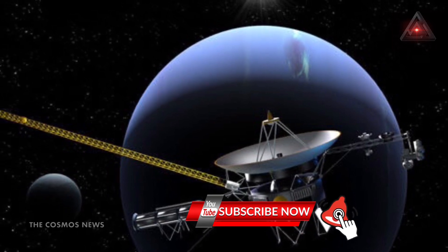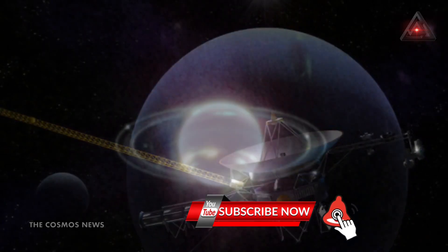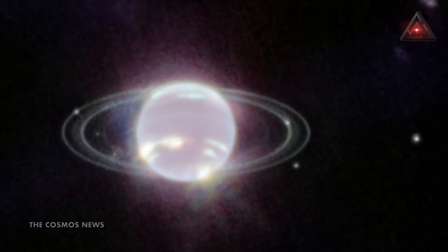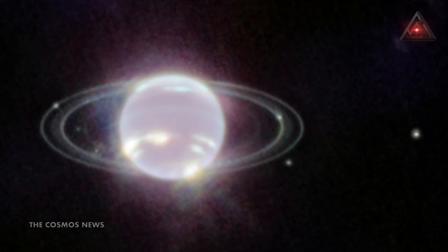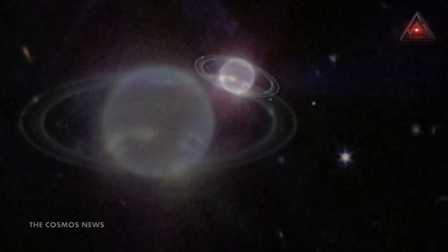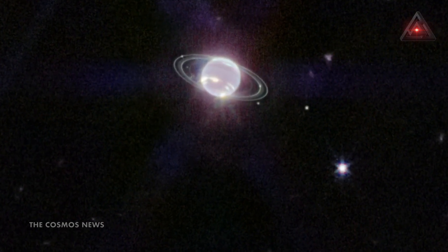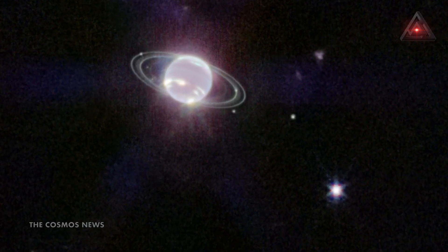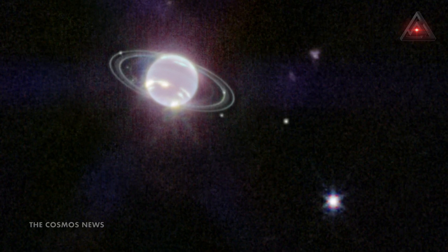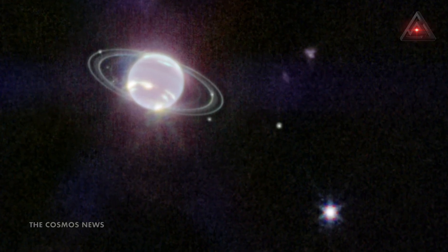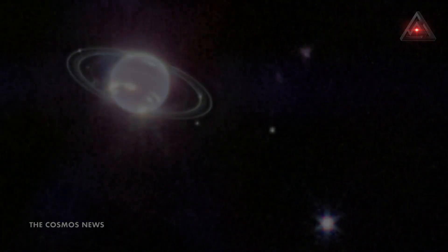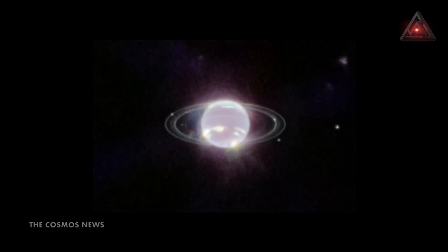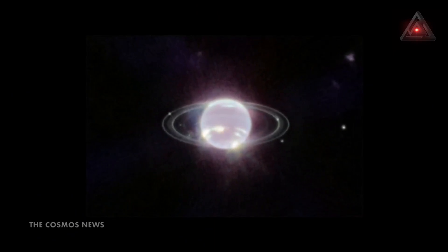In addition to several bright narrow rings, the Webb image clearly shows Neptune's fainter dust bands. Heidi Hamel, a Neptune system expert and interdisciplinary scientist for Webb, notes: 'It has been three decades since we last saw these faint dusty rings, and this is the first time we've seen them in the infrared. Webb's extremely stable and precise image quality permits these very faint rings to be detected so close to Neptune.'